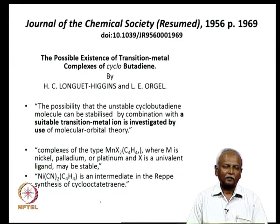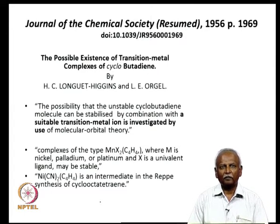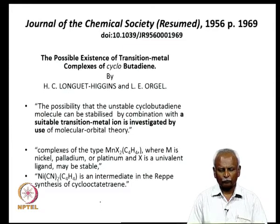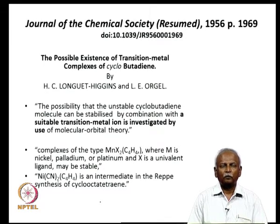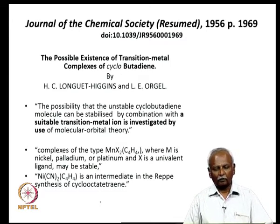At this time, it was Longuet-Higgins and Orgel who studied cyclobutadiene. Cyclobutadiene was already known to be an anti-aromatic system. They looked at the nature of a metal complex that would be formed by this cyclobutadiene with a metal compound. They conjectured that a suitable transition metal ion for the formation of a pi complex between cyclobutadiene and a metal would be of the type MX2·C4H4, where M is nickel, palladium, or platinum, and X is a univalent ligand. They predicted, before it was actually synthesized, that a complex of cyclobutadiene could be formed by the ion group metal atoms.